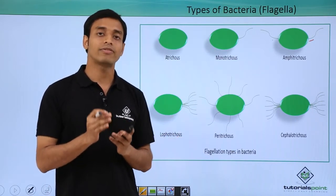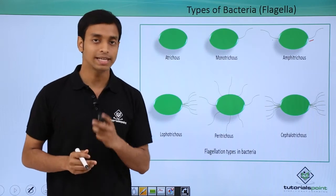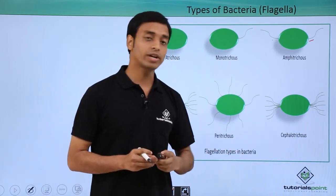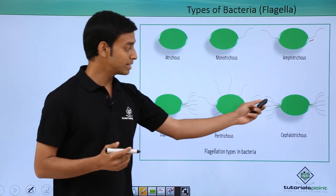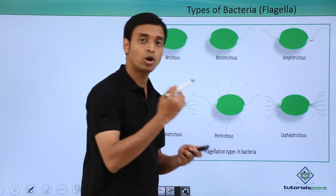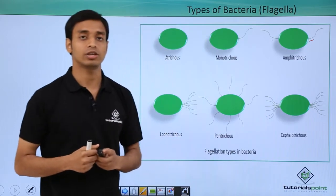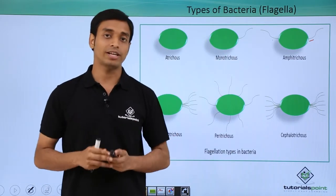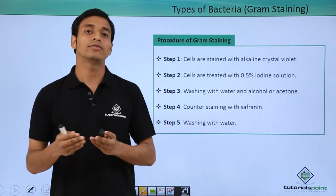Peritrichous means flagella are spread all over the cell surface — we can find flagella all over the surface of the bacterial cell. The last category is cephalotrichous, which has a group or bunch of flagella present on opposite ends — a tuft of flagella on each end. These are the types based on flagella.